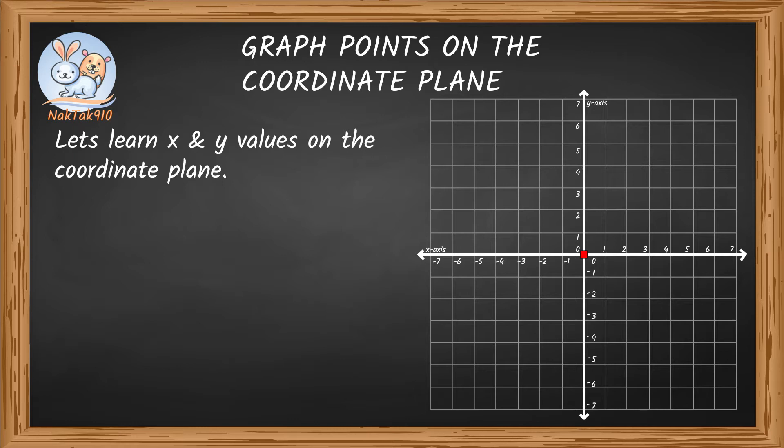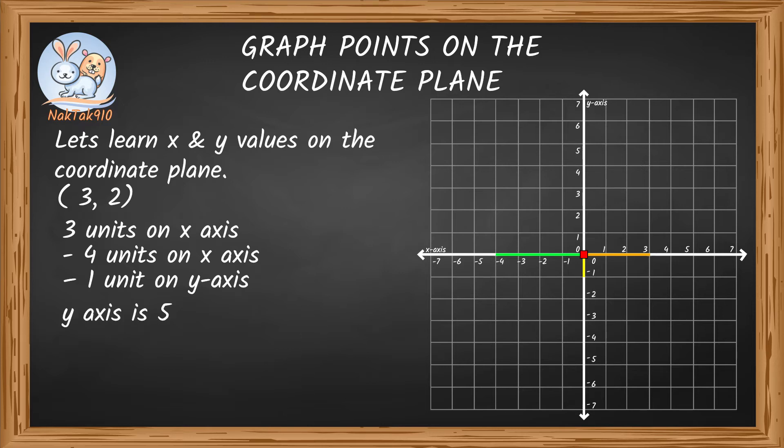Let's look at an example. Say we're looking at 3 and 2. As I said, we always need to start from the origin, but first, help me with these. If I say 3 units on x-axis, then it's this. If I say negative 4 units on x-axis, then it's this. If it's negative 1 unit on y-axis, it's this. Y-axis is 5 units, then it's this one. Correct.